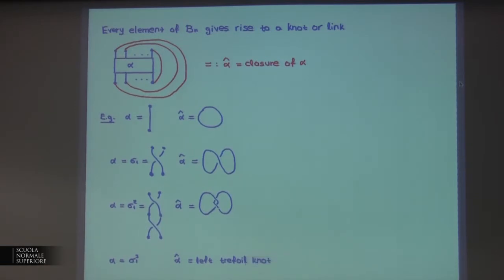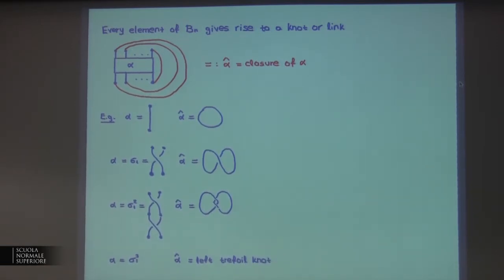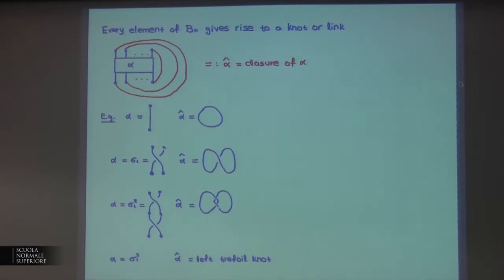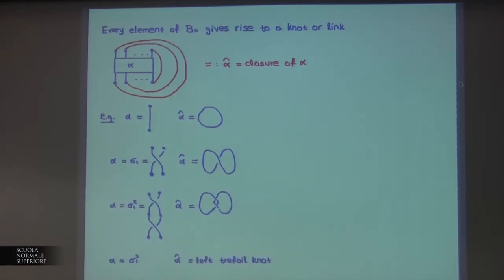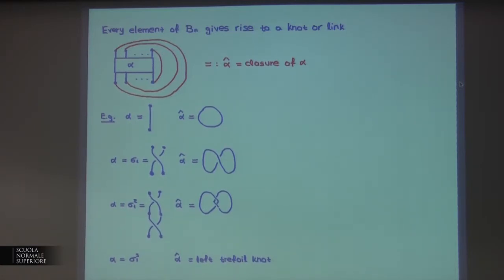For example, when you close the identity braid, you obtain the unknot. If you take sigma_1 and close it, you obtain this diagram. sigma_1 squared and sigma_1 cubed — the latter is actually the trefoil knot we saw in the previous slide.